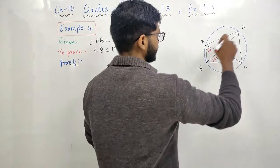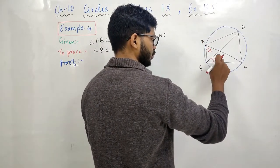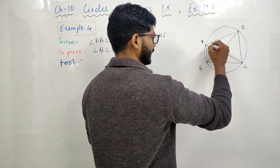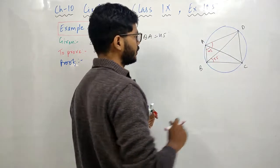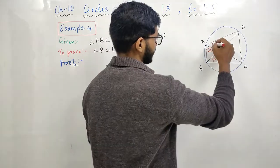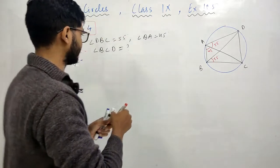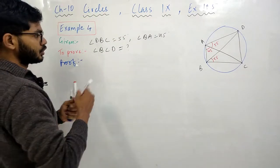अब आप जरा देखिए ये वाला angle. मैं थोड़ी देर के लिए इस line को भूल जाओ तो ये वाला angle और ये वाला angle आपस में equal होंगे क्यों? क्योंकि angle subtended on the same segment या फिर chord. तो इसका मतलब ये वाला angle भी 55 degree का आने वाला है. तो पहले ये कर लेते हैं.